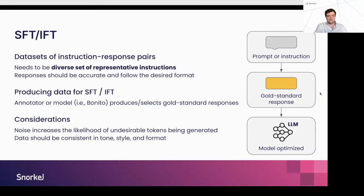For supervised fine-tuning data requirements: having a diverse set of prompts and instructions is a vital first step — before even considering responses, focus on your instructions. A diverse instruction set representative of your downstream task is a good starting point. For gold-standard responses, the slowest method is having an annotator manually write them. A quicker approach using weak supervision is having a model write them and then using heuristics or a quality model to filter by quality. You can also use techniques like Bonito, a research paper that turns unstructured data into supervised tuning datasets. Data should also be consistent in tone, style, or format — consistent inputs yield consistent outputs.